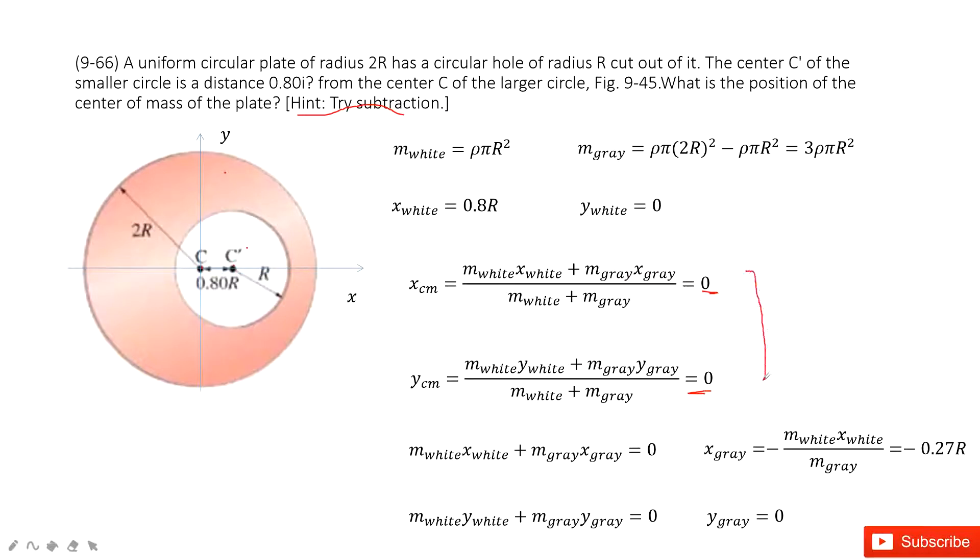So, now we get these two functions. Now, we can look at what quantity is given. First one, the mass of white can be found by the density times these areas, πR².